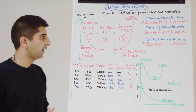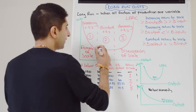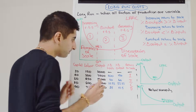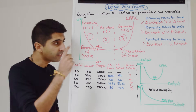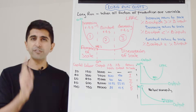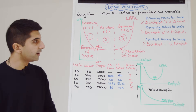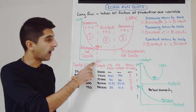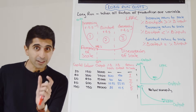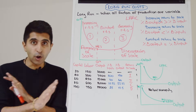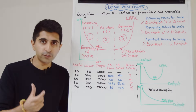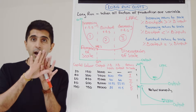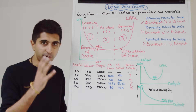There is one more concept we need to learn here: the minimum efficient scale, or MES. The MES occurs at quantity Q*. It's the lowest level of output required to fully exploit all economies of scale — the point where the average cost curve stops decreasing. After that point there are no more economies of scale and we get constant returns to scale. This is a very important point for a business: after Q* costs can't get any lower.